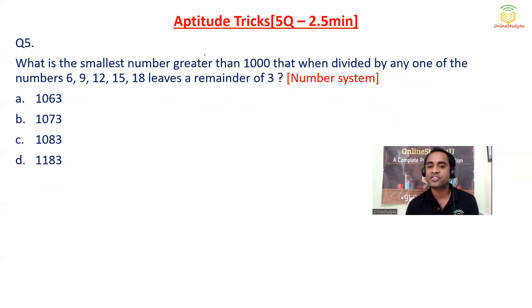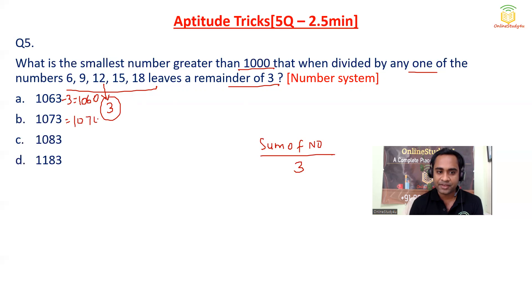What is the smallest number greater than 1000 that when divided by any one of the numbers 6, 9, 12, 15, and 18? So all these numbers have a common factor 3. Now, if these numbers are divisible by 6, 9, 12, 15, and 18, it should be also divisible by 3. And divisibility rule of 3, sum of numbers should be divisible by 3. Now, they are also leaving a remainder of 3, so just subtract 3 from here. So 1060, and then 1070, and then 1080, and then 1180. Now you see, so this particular number, their sum will be 9, it will be divisible by 3. So option C becomes the correct answer.